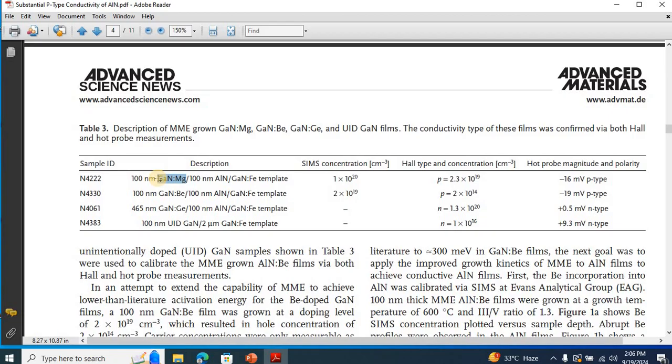So, the voltage is minus 16 millivolts and it's showing us P-type, right? Now, as you can see over here, minus 16 millivolts and its conductivity type is P-type.